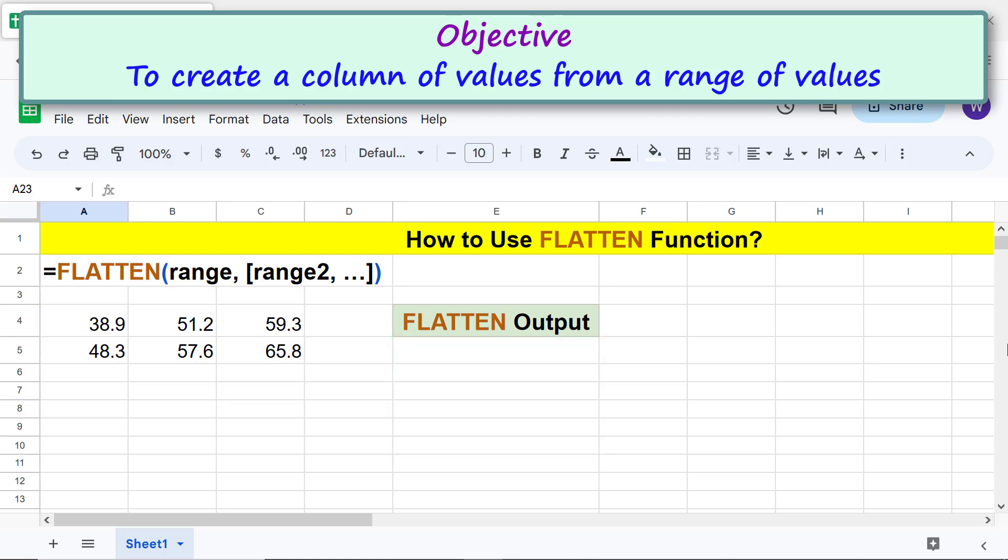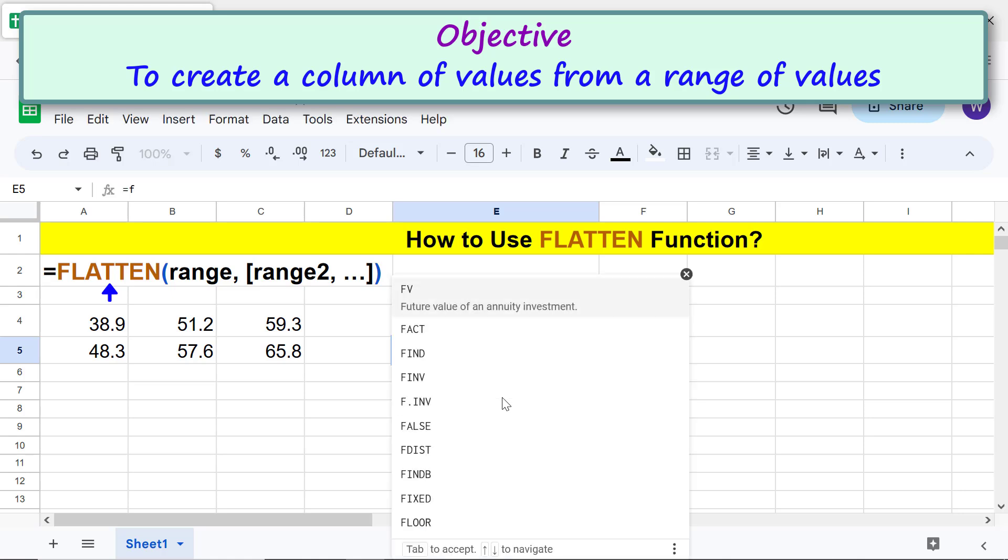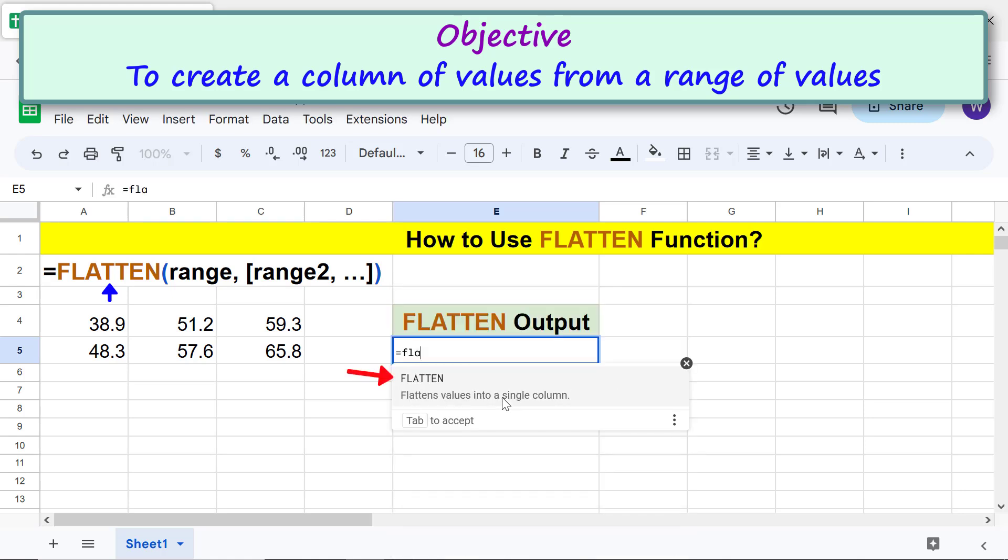Alright, let's type the Flatten function formula. First, type the equal to symbol, F-L-A, and select Flatten. For range, select this range, and press enter.